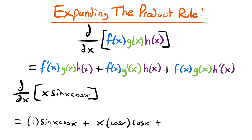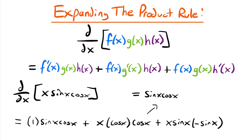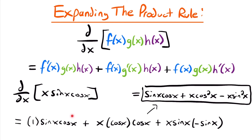Then we add the final term: the original first two functions x and sin x, multiplied by the derivative of cos x, which is negative sin x. Simplifying, our answer is sin x cos x plus x cos squared x minus x sin squared x. We simplified x times 1 to just the two functions, multiplied the two cosine terms to get cos squared x, and the two sine terms to get sine squared x with the negative.